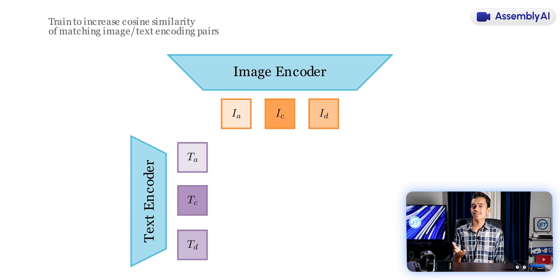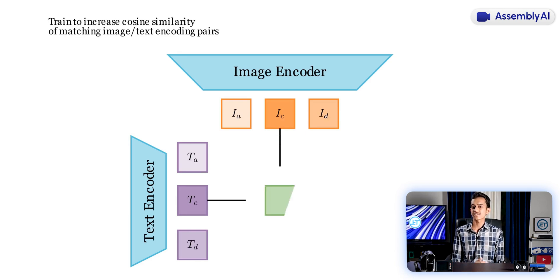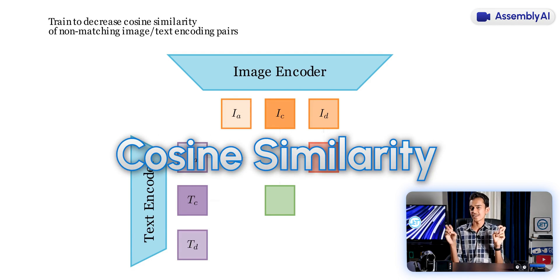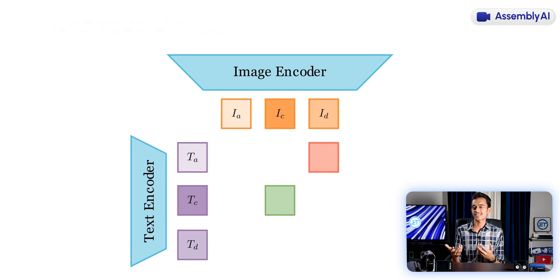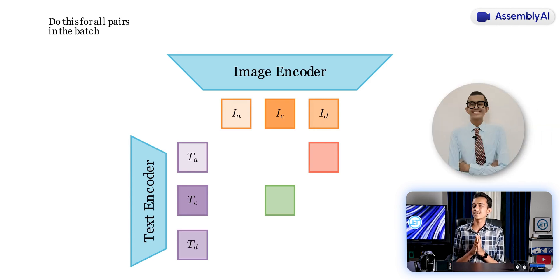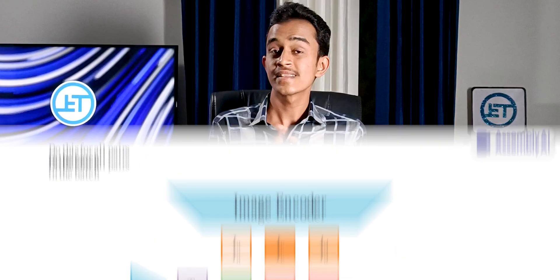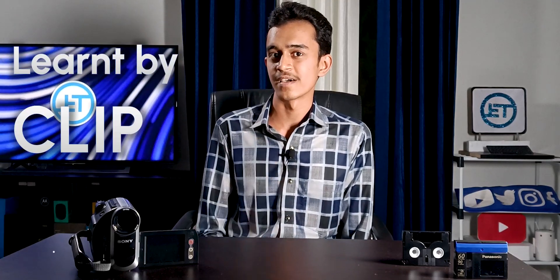The model is trained to calculate the similarities and dissimilarities of matching and non-matching pairs. This similarity is called cosine similarity, which has something to do with vector maths. In this way, the visual representations of objects are learned by CLIP.